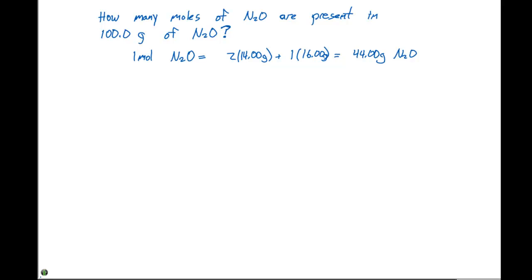This is how much 6.022 times 10 to the 23rd N2O molecules is going to weigh. So if we have 100.0 grams of N2O, we can set up a conversion factor problem and use dimensional analysis. Our given unit is grams of N2O and the desired unit is moles of N2O. We know that 44.00 grams of N2O is equal to 1 mole of N2O.